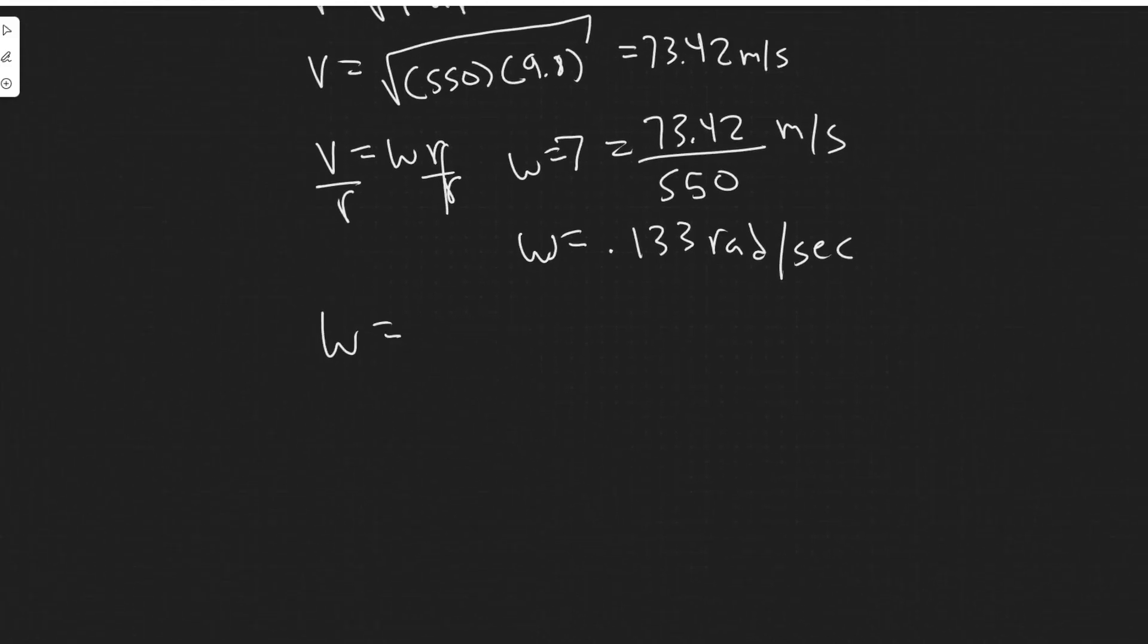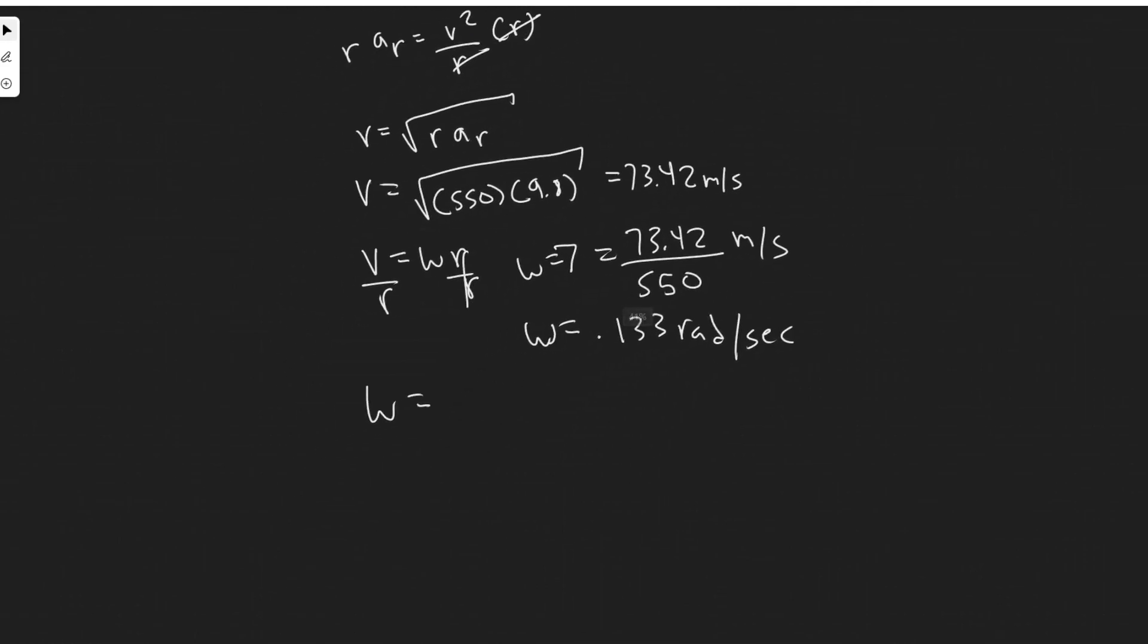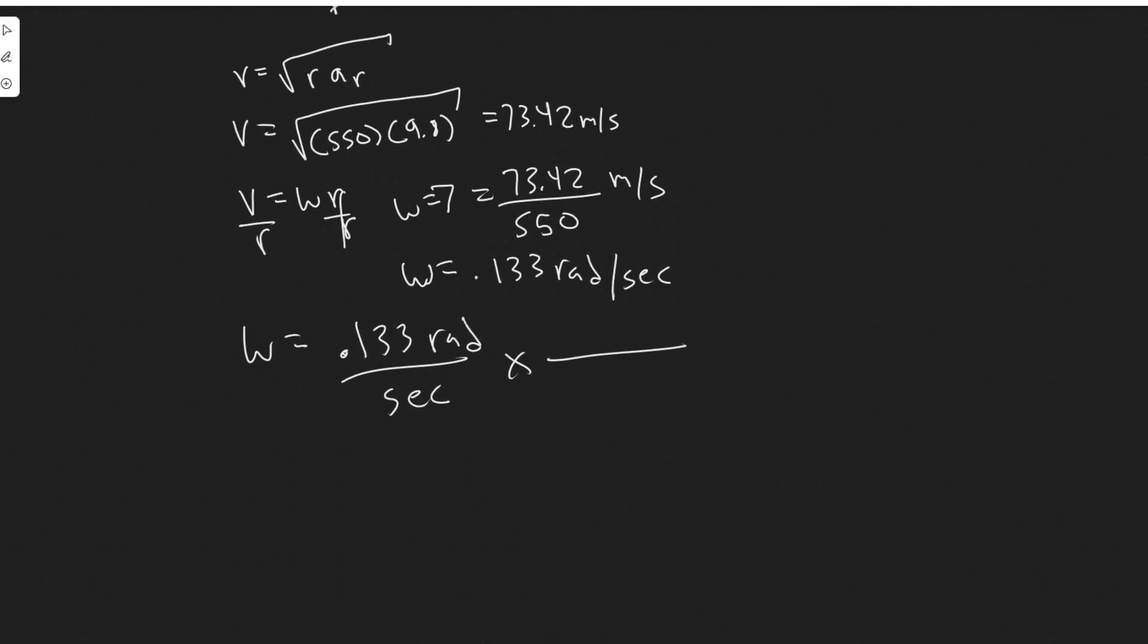And so now we have omega. But as I said before, they want us to solve for it in terms of revolutions per day, not radians per second. So we have 0.133 radians per second. And then converting, two pi radians is the same as one revolution. Just kind of think of the unit circle, two pi's all the way around. So we have the radians cancel. So now we have revolutions per second. But we need revolutions per day.